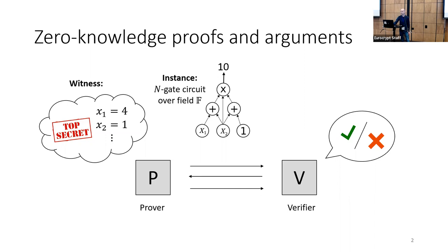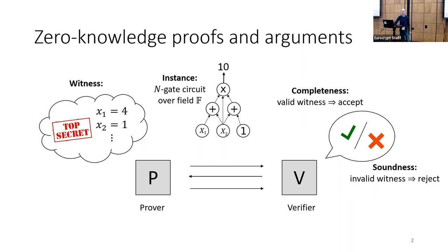All zero-knowledge proofs should have three important properties. Completeness: if the prover is telling the truth and really knows a witness to the circuit, then the verifier should accept. Soundness: if the prover is cheating and the circuit's not satisfiable, then the verifier should reject. And finally, zero-knowledge: throughout the course of this conversation, the verifier shouldn't learn anything more than the fact that the circuit's satisfiable, and in particular nothing about the witness.